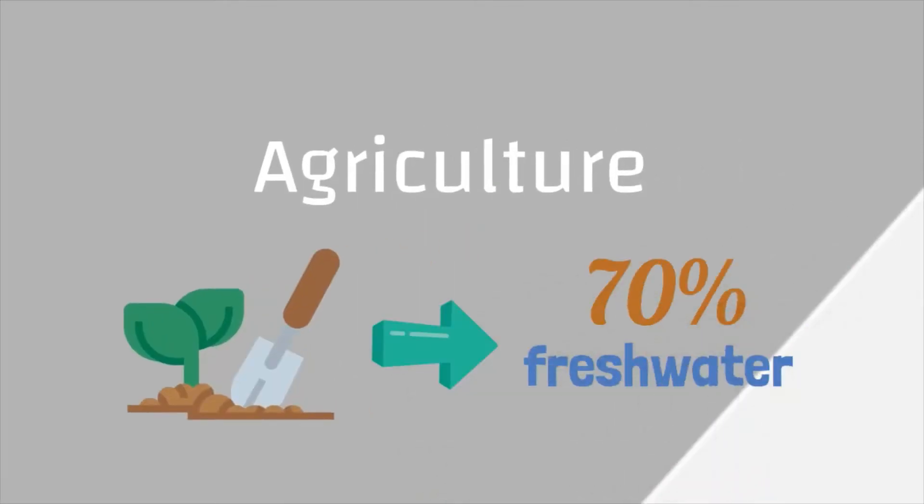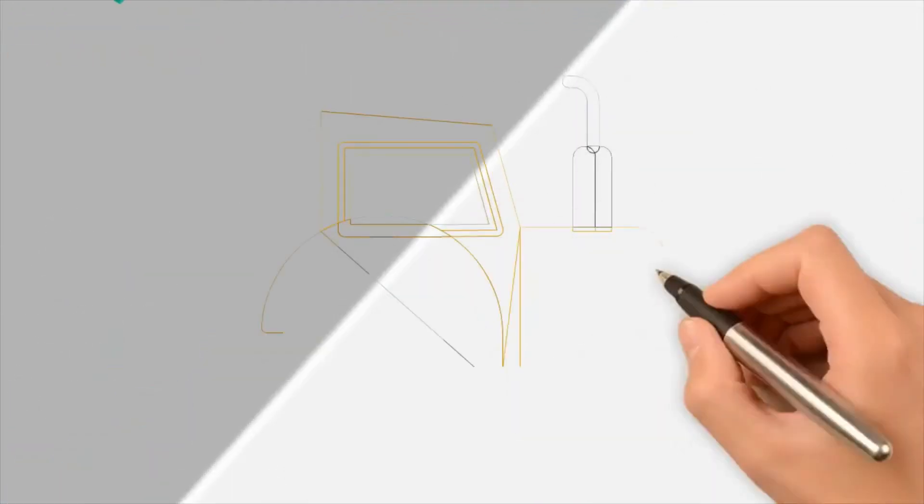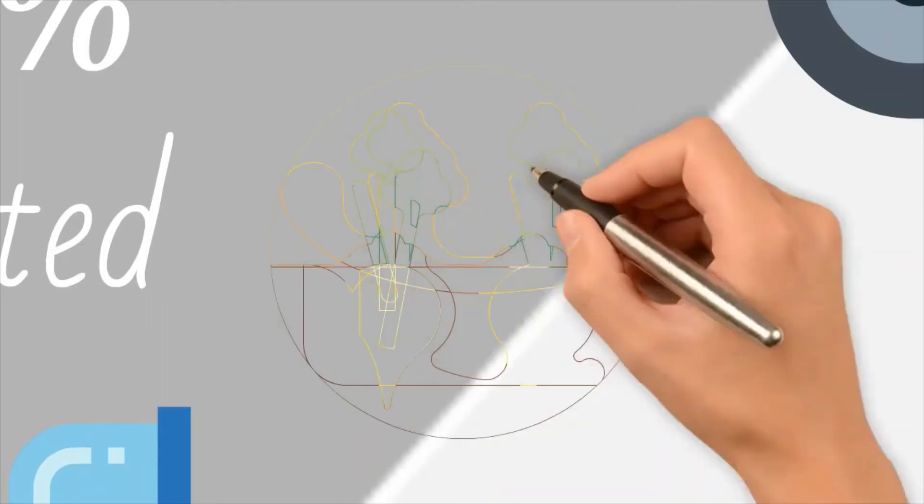Agriculture uses 70% of the world's accessible fresh water, but some 60% of this is wasted due to leaky irrigation systems, inefficient application methods, as well as the cultivation of crops that are too thirsty for the environment in which they are grown.